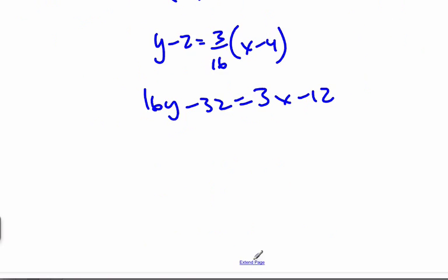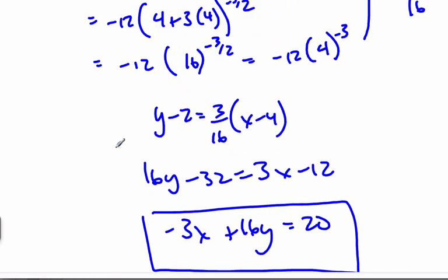And so, my tangent line, I get negative 3x plus 16y is equal to 20 if I add the 32. This is the equation of the tangent line.